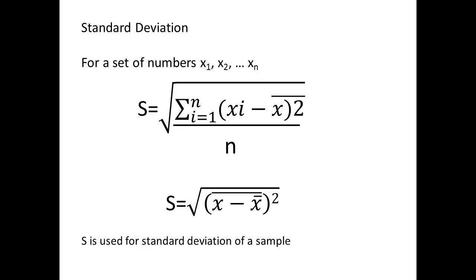The standard deviation S for a set of numbers X₁, X₂, and so on through to Xₙ, is given by the root of Σ(Xi - X̄)² divided by N, for the set of numbers from 1 to N.